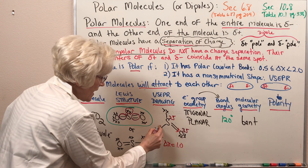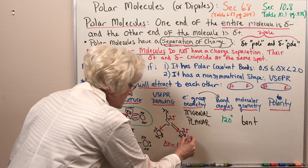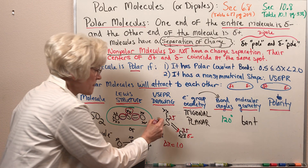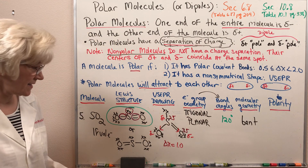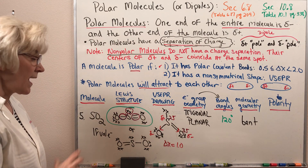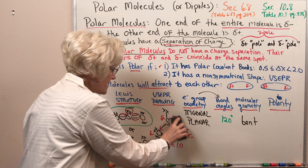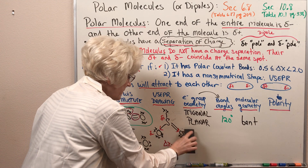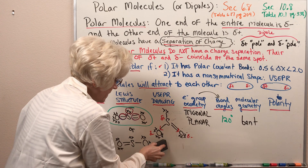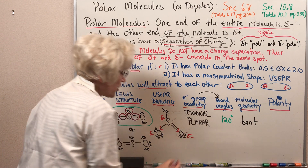As a result, these bonds are polar covalent bonds. Oxygen is the more electronegative atom, so we put a partial negative on each of the oxygens and partial positive on the sulfur. Now we want to take a look at the overall shape of the molecule, examining the partial charge distribution on the sulfur dioxide molecule.